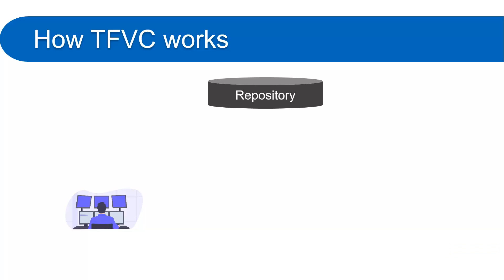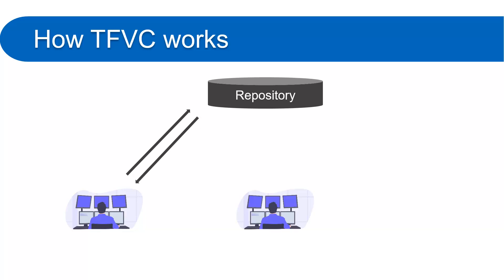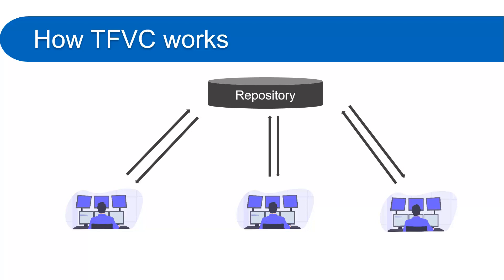Assuming the code is on the repository and a new developer has joined, the developer will first clone the entire code from the repository to his own local system. He will make some changes and send them back to the repository. Similarly, a second developer will also clone the entire code to his local system, make changes, and push them back. A third developer will do the same — get the code, make changes, and commit them back to the repository.